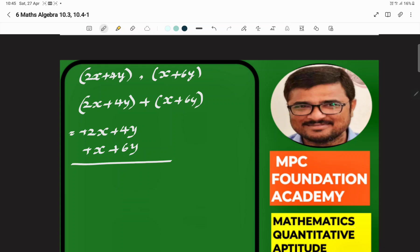Now we solve: 2x plus x equals 3x, and 4y plus 6y equals 10y. So the answer is 3x plus 10y.